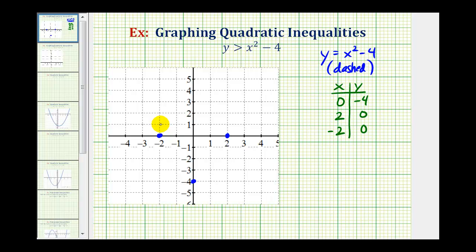Again, because the points on our graph will not satisfy the inequality, we'll make a dashed graph. And now the solution will be the points in the region inside the parabola or outside the parabola.